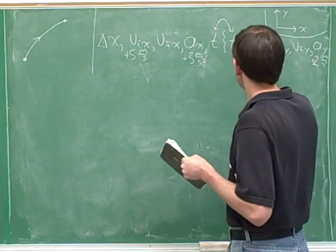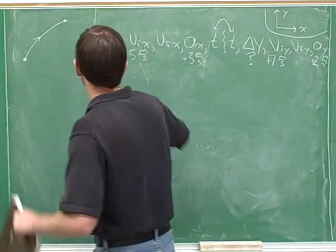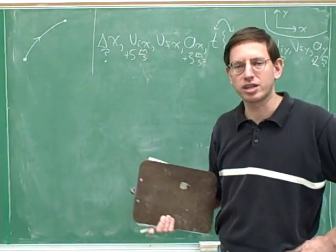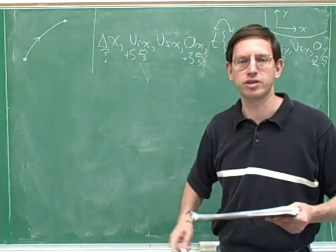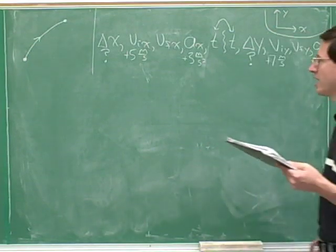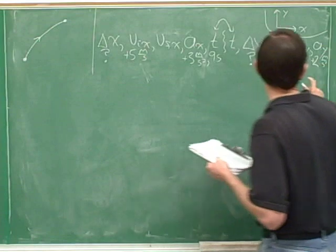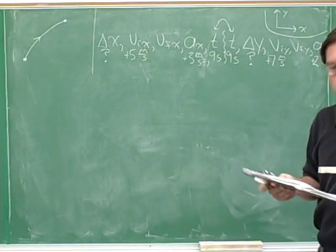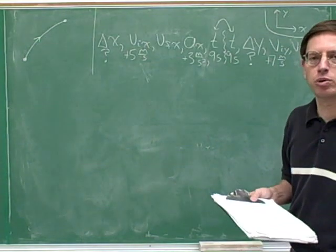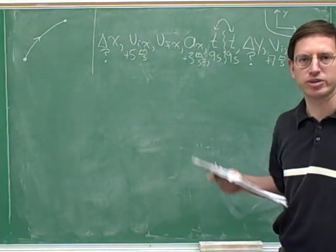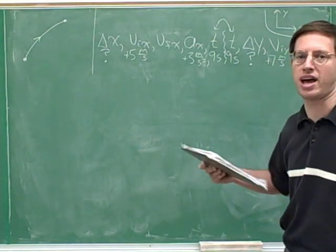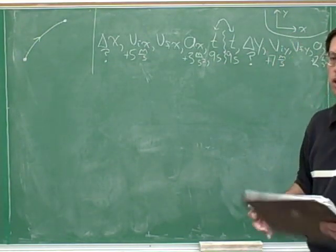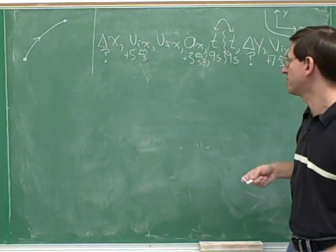They're asking for displacement, so we need the x displacement and y displacement — mark those with a question mark to indicate the unknown. Time = 9 seconds, the same for both x and y components. This is step four: write down all kinematics variables. In two dimensions there are generally ten variables — five for x and five for y. Don't be lazy; write them all down with signs. Time is always positive, but write signs for everything else.